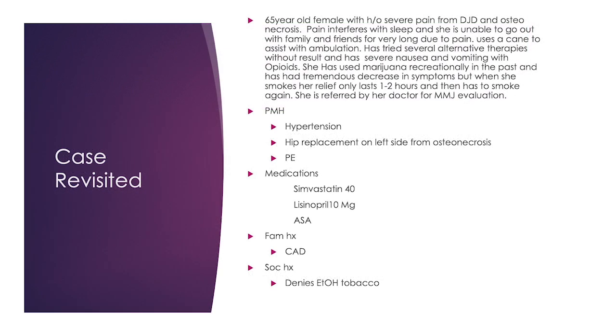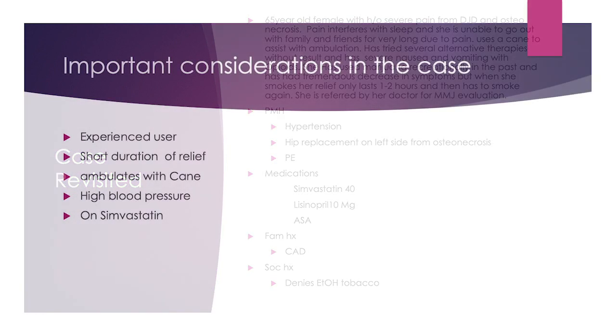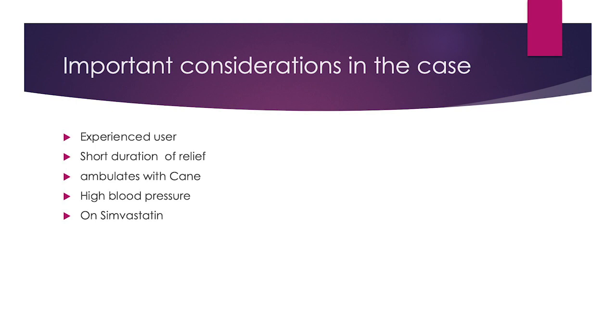Back to the case: the important things to consider with this patient are that she is an experienced user, so I could use a slightly higher dose, but I still want her to start low because she doesn't know how it's going to affect her in this context. She's getting short duration of relief, so I want her to use something longer-lasting like tincture or edibles. She ambulates with a cane, so she's a fall risk — definitely start with a lower dose. High blood pressure and potential cardiovascular effects mean we want to avoid smoking. She's on simvastatin, which can elevate liver enzymes, and there is some evidence that marijuana can have some effect on the liver as well, so following those very closely is important.